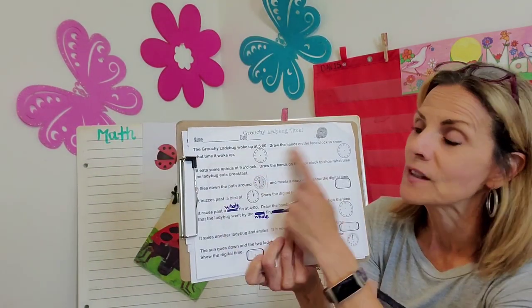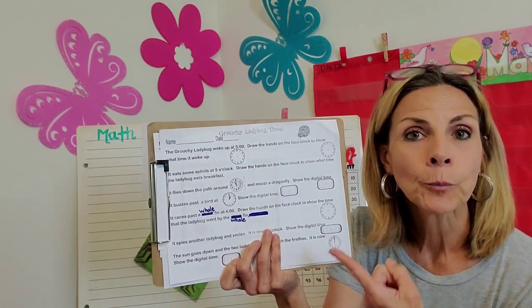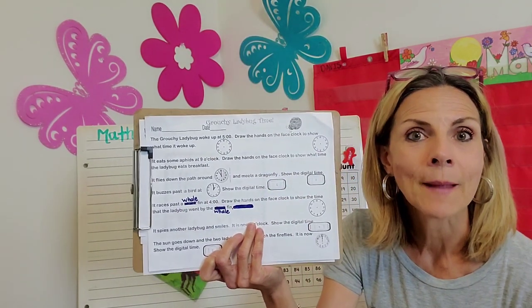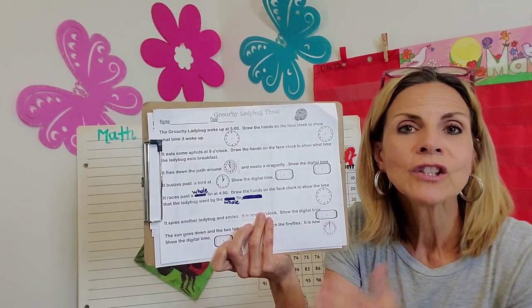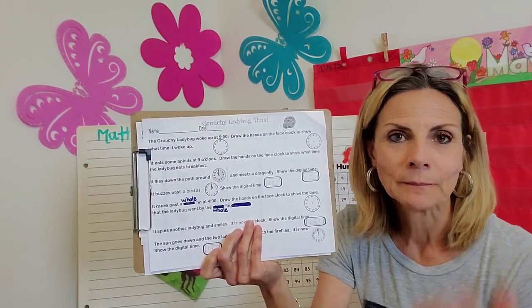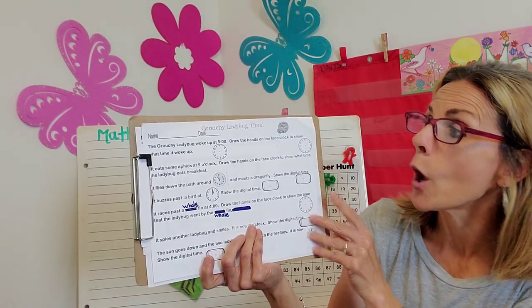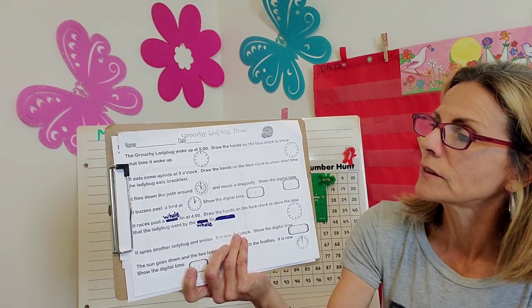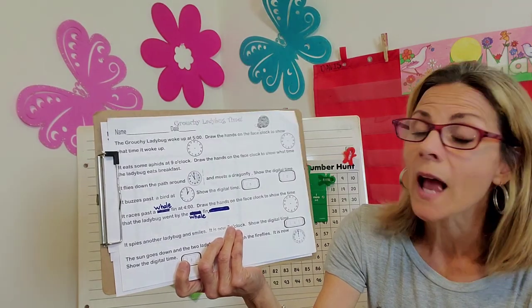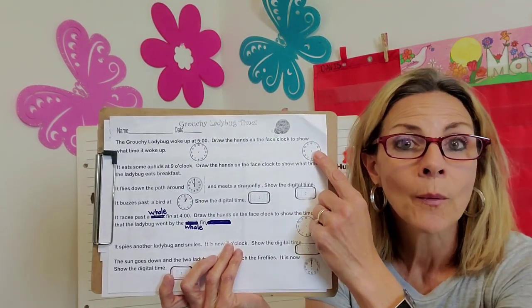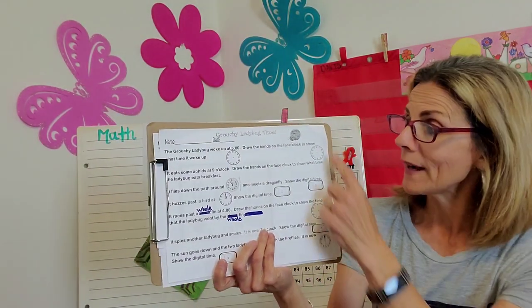So, the first thing we're going to do is read through and discuss what you're going to be doing. If you print the sheet, you'll just be marking the time on the little mini clocks. If you can't print the sheets, then you can just draw the clocks and fill the time in. So, let me read through the story. It says, the grouchy ladybug woke up at five o'clock and that's digital time. Draw the hands on the face clock to show what time it woke up. So, you're just going to be drawing the hands if you print this sheet.